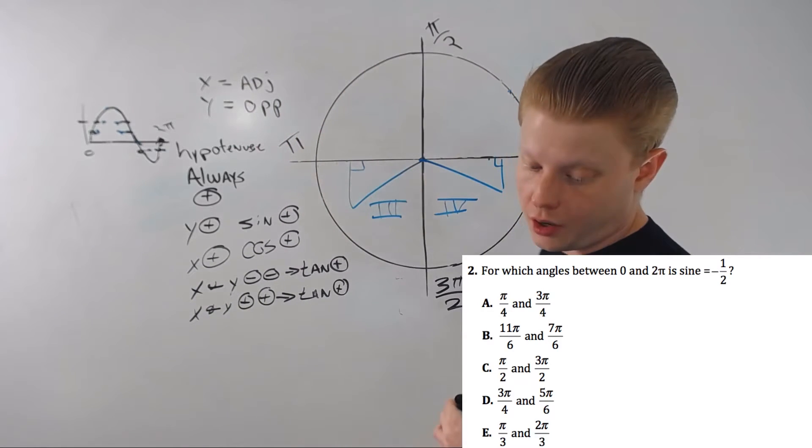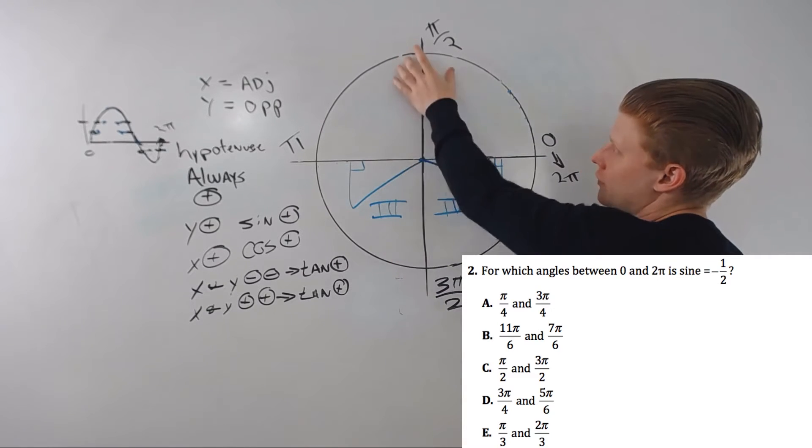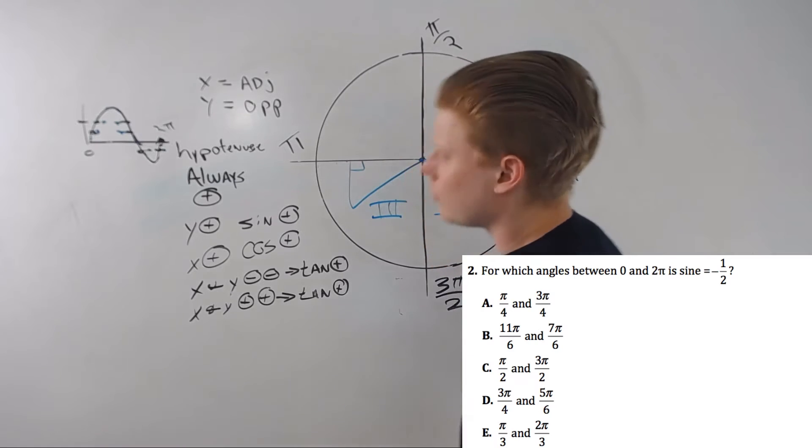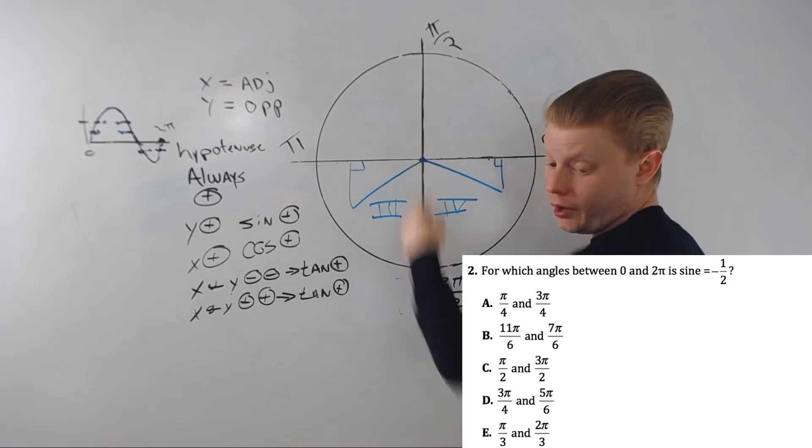C. Pi over 2, obviously going to be positive. 3 pi over 2 is going to be negative. But pi over 2 is going to be positive. 3 pi over 4. Well, that's over here. That's positive. 5 pi over 6. These are both in the same quadrant. They're both positive.